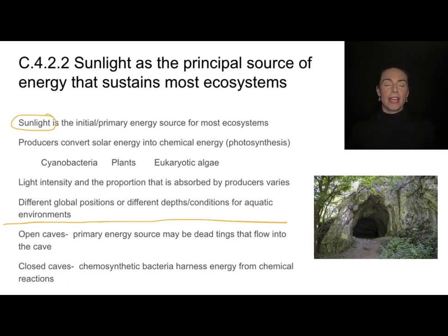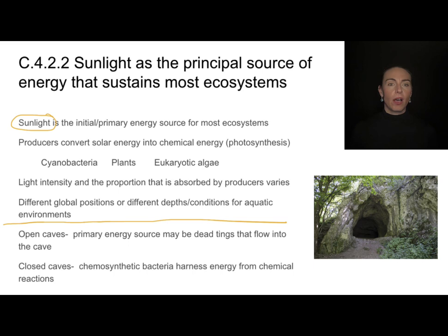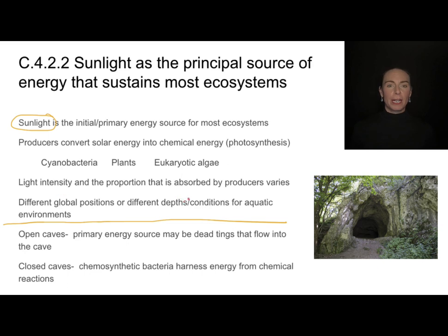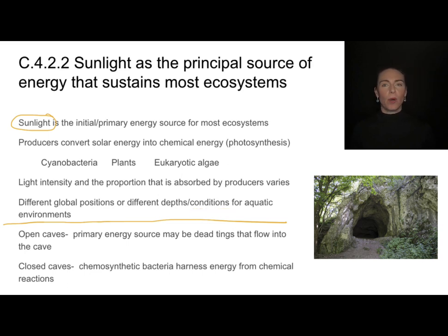What affects the production of those producers? Things like light intensity, which can vary depending on where you are — whether you're closer to or further from the equator, or if you're an aquatic plant, how deep you are in the water or what conditions are present. Is it cloudy? Is it clear water? Lots of things can affect that, but we want to be thinking about sunlight as that primary energy source.